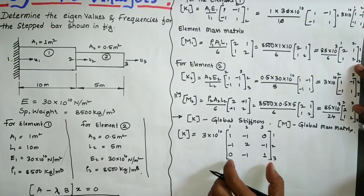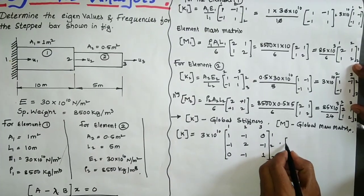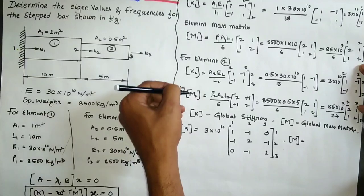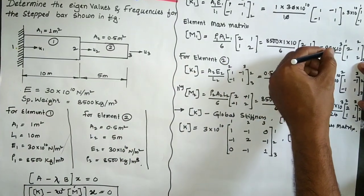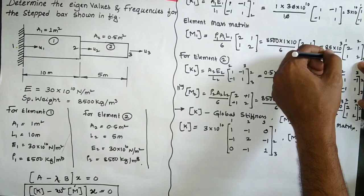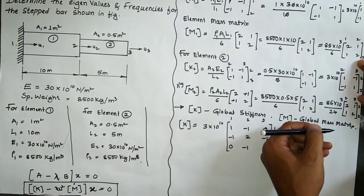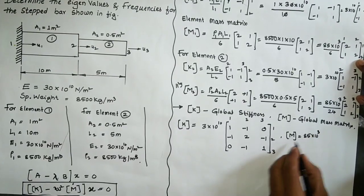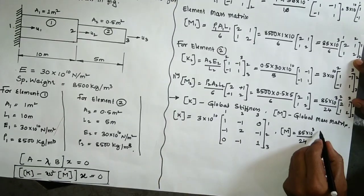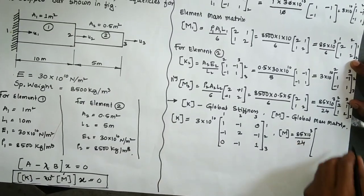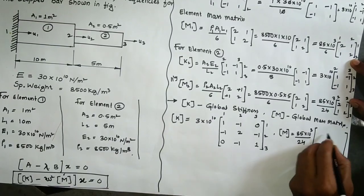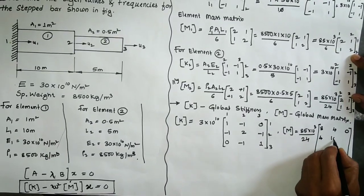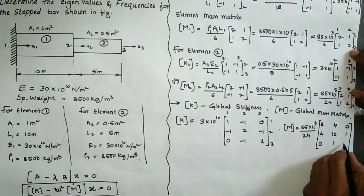For the global mass matrix, we add M1 + M2. The common term taken out gives (85×10³/24) as the scalar factor. Assembling over nodes 1, 2, 3: M = (85×10³/24) × [8 4 0; 4 10 1; 0 1 2].